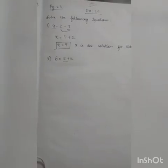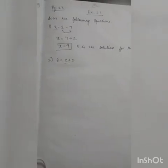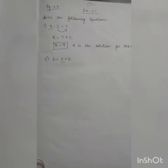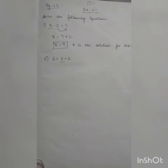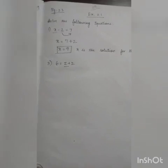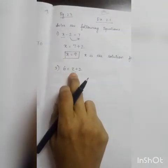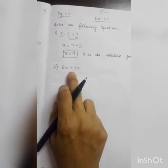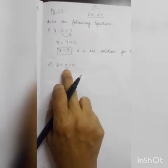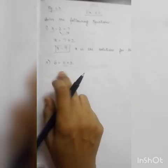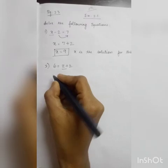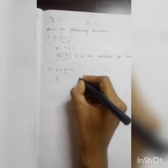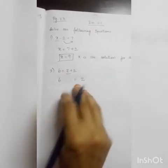Next is your third question. The third question is: 6 is equal to z plus 2. Here the variable is z, so we are in need of finding the answer for z. I am going to keep z as such and bring the 2 to the other side.